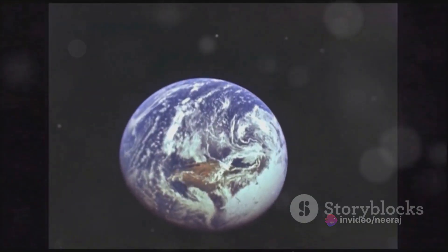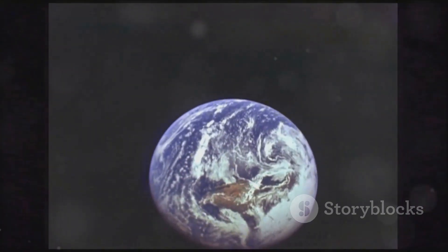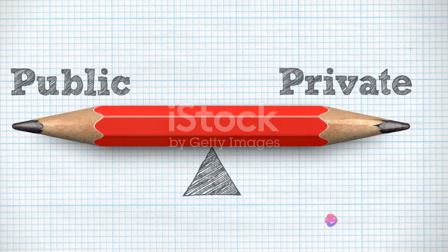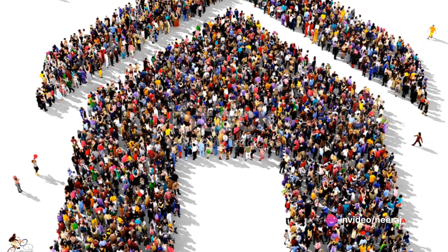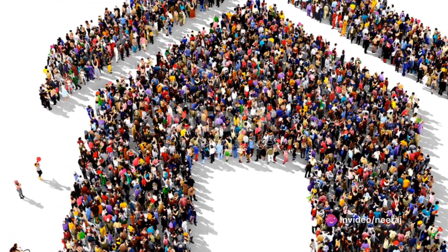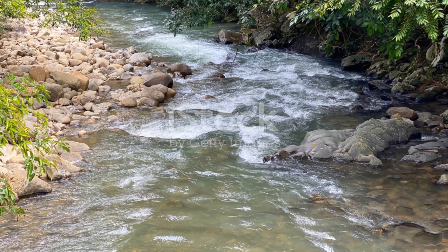So Venus, our inhospitable twin, serves as a stark reminder of how unique and precious Earth's conditions truly are. It's a vivid example of how planets that seem similar in many ways can end up so drastically different, and why we should cherish the delicate balance that allows life to thrive on our own blue planet.